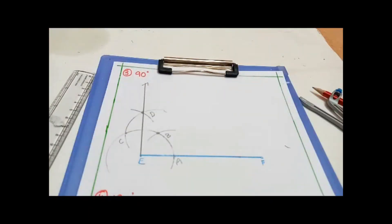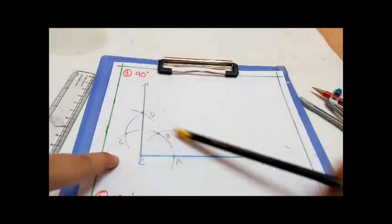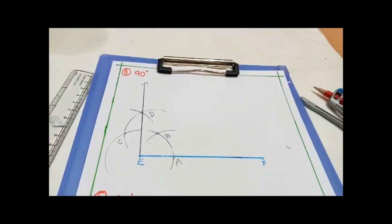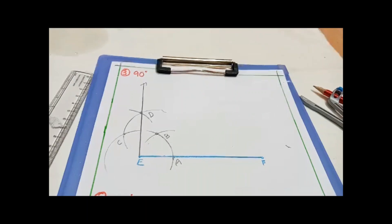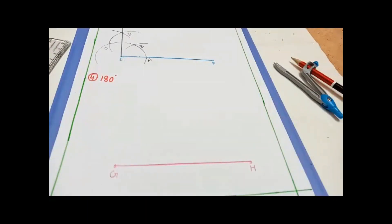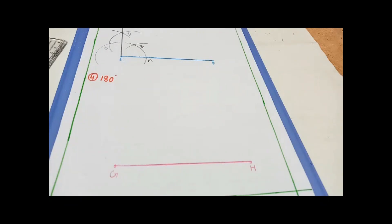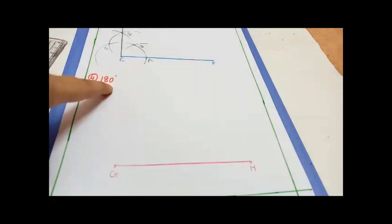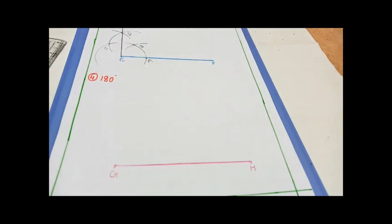Let's verify — yes, we get 90 degrees. So for 90 degrees: construct 60 and 120, then bisect between them to get 90 degrees. Next, let's see how to construct 180 degrees, which is a straight line. Since 180 = 60 + 60 + 60, we first draw 60 degrees, then extend to 120 degrees, then to 180 degrees. There is no need for 90 degrees here.